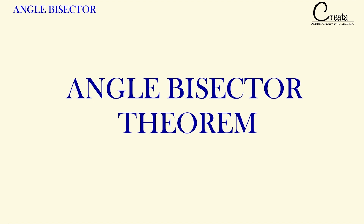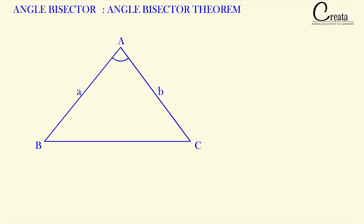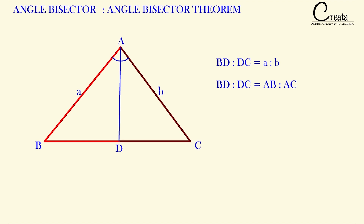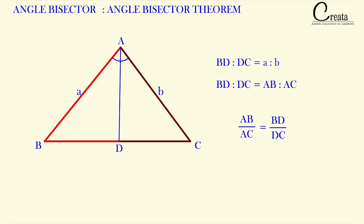Let's move to the next fundamental: the angle bisector theorem. For understanding this concept, let's take a triangle ABC with AB as 'a' and AC as 'b'. Let AD be the angle bisector of angle A, so both half-angles are equal. As per this theorem, in the case of an angle bisector, the ratio of BD to DC equals the ratio of a to b, where a and b are the lengths of AB and AC respectively. In formula form: AB/AC = BD/DC.